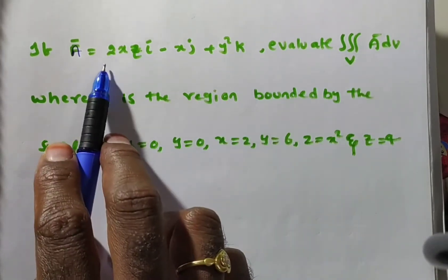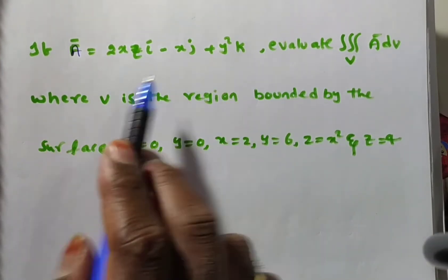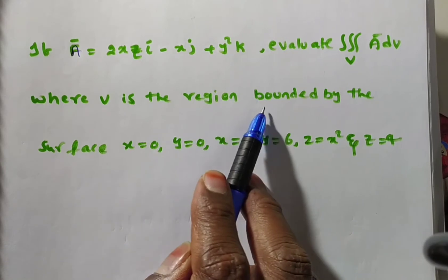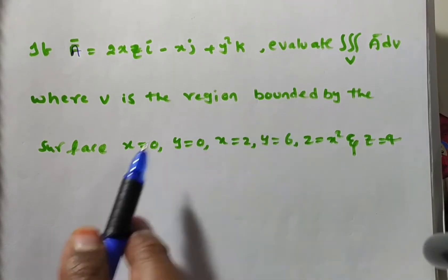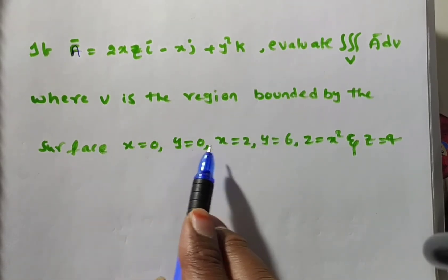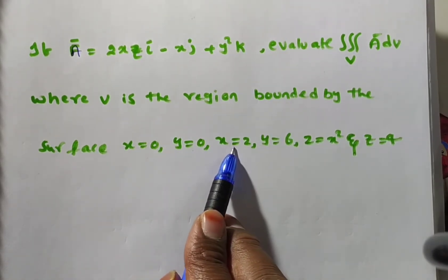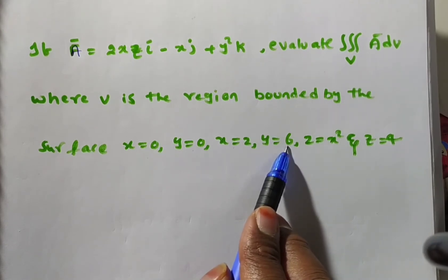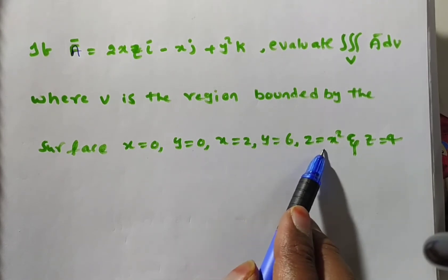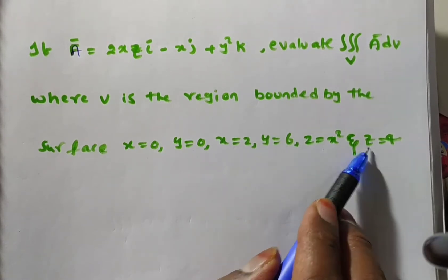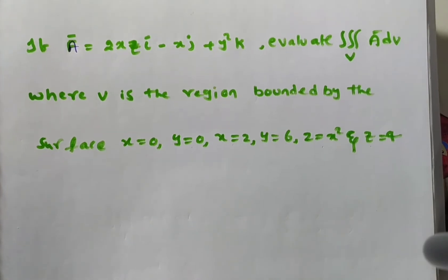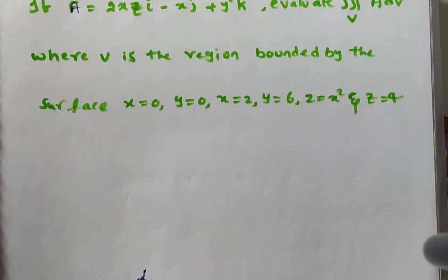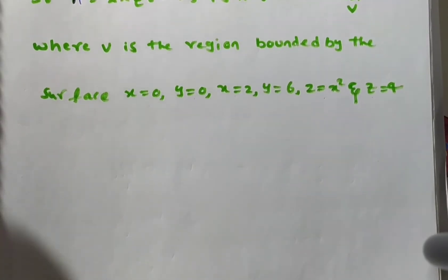Here a-bar is a vector, where V is a region bounded by the surface x=0, y=0, x=2, y=6, z=x² and z=4. So the limits are directly given — no need to find them out.